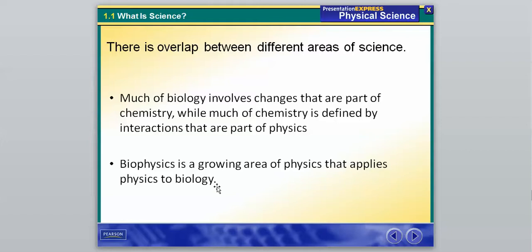Kind of hitting on that same theme that was mentioned in the last slide, there is overlap between areas of science. Much of biology involves changes that are part of chemistry, while much of chemistry is defined by interactions that are part of physics. So you're not going to really be able to separate these branches of science. You have to be familiar with all of them in order to be successful. That's why we really feel like we need to get this class in for you guys your freshman year here, because it is important. And then our last overlap here, biophysics is a growing area of physics that applies physics to biology. So it's a direct relationship between the two.